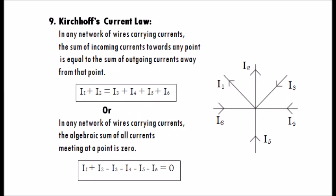Kirchhoff's current law: in any network of wires carrying currents, the sum of incoming currents towards any point is equal to the sum of outgoing currents away from that point — that is, I1 plus I2 equals I3 plus I4 plus I5 plus I6. Equivalently, the algebraic sum of all currents meeting at a point is zero: I1 plus I2 minus I3 minus I4 minus I5 minus I6 equals 0.